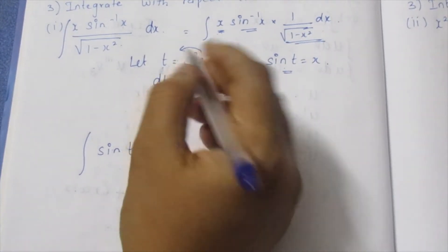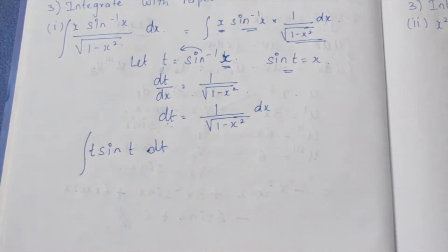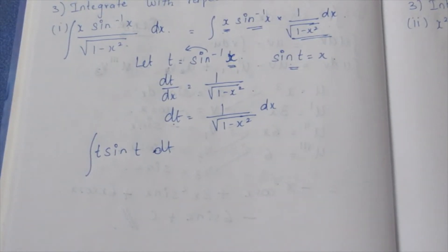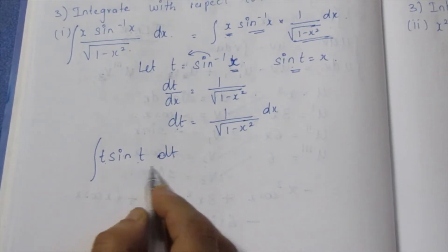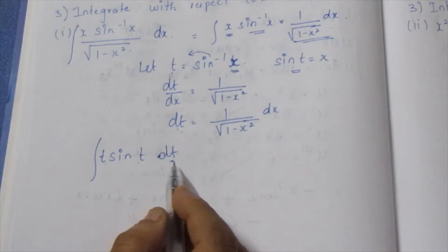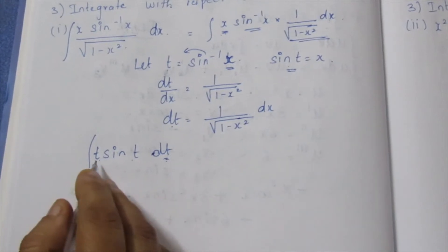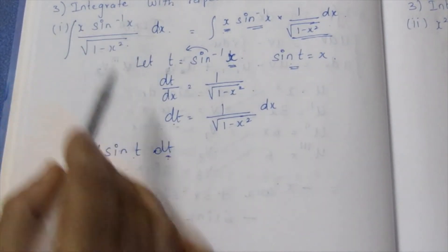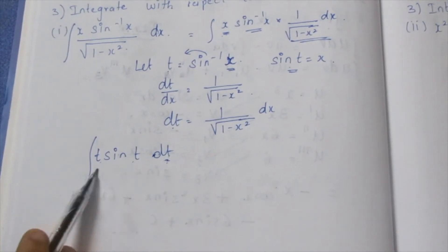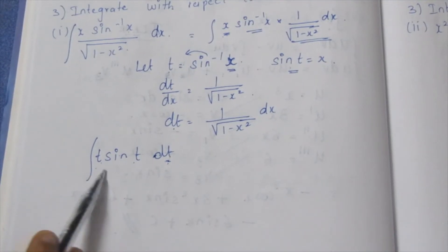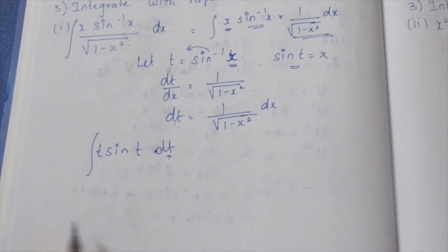T is sin inverse x, and T and T is done. Integrate T with respect to T — that is sin T versus dT. Now, this is how to solve. This is a clear question, a little easier, but not easy. We can integrate this. We don't need to have a differentiation or multiply. We need a formula.